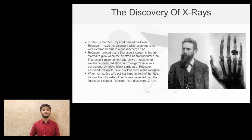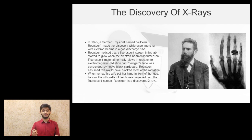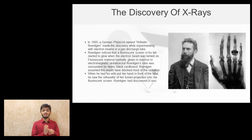Firstly, let's talk about the history of X-rays. It is not known by many people that X-rays were discovered by accident. The famous German physicist William Rontgen noticed that when a beam of electrons is incident on a fluorescent material, the fluorescent material starts to glow. When he asked his wife to place her hand in front of the electron tube, the silhouette of her bones was seen.